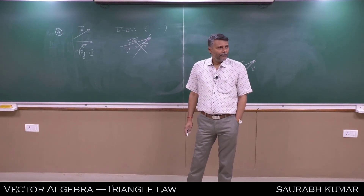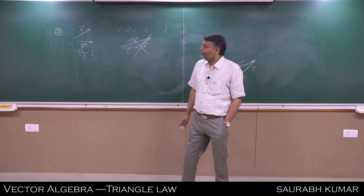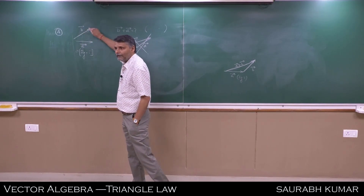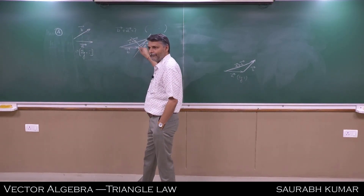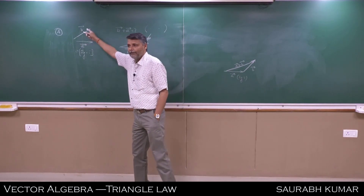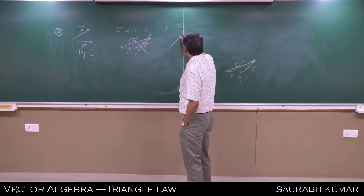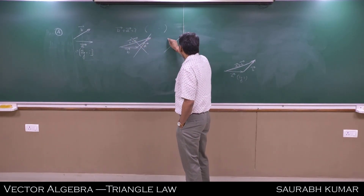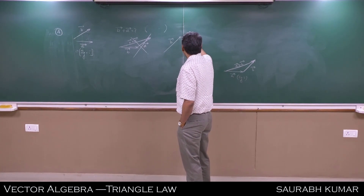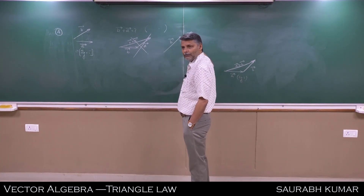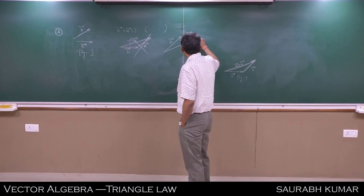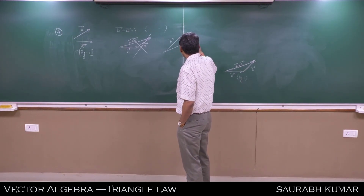How do two vectors compare? You have to draw a line parallel for the two vectors. This will be B - B is given. And this will be A. The resultant is from tail to head. Draw the correct diagram; if you drew the wrong one, understand the mistake.